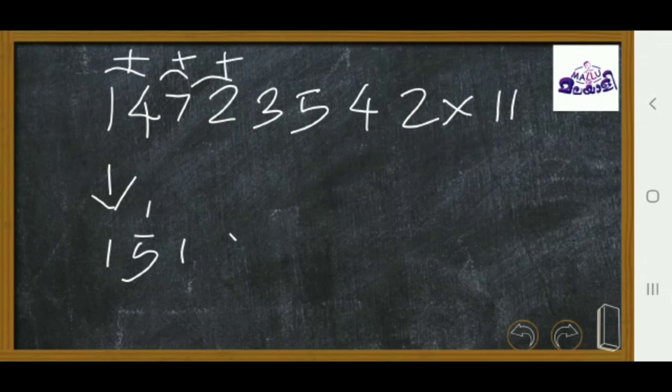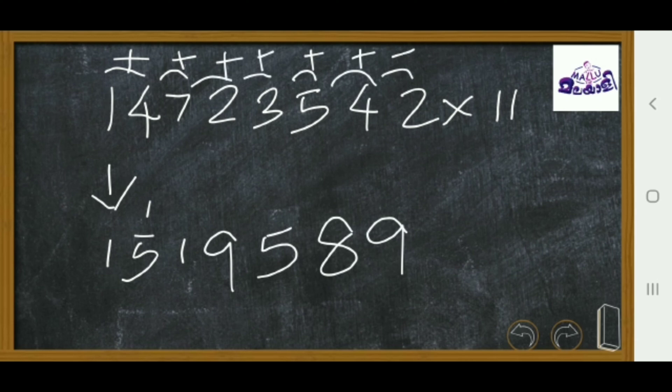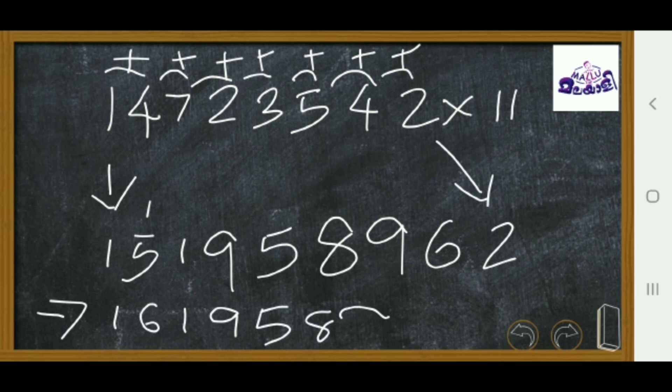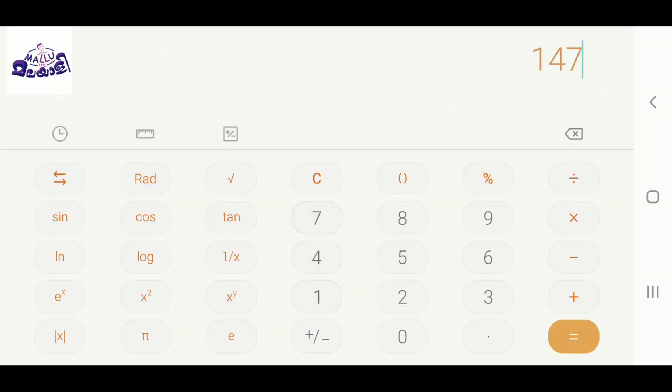3 earlier, which means 5. Calculator checking 147235424. 1619589962. This is the video.